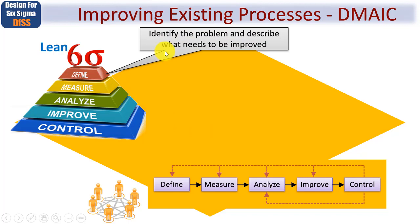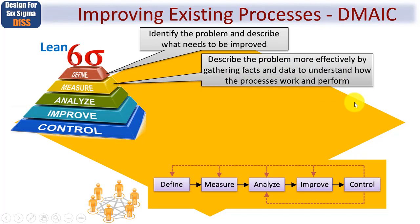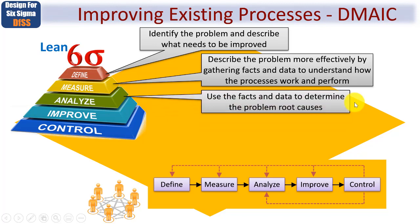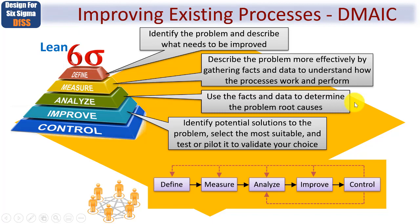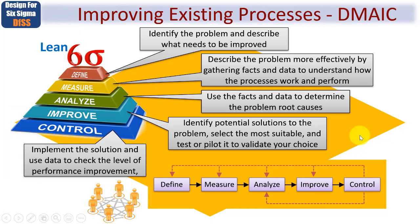The Define phase identifies what the problem is and describes what needs to be improved. Because DMAIC is used for existing processes, products or services, the Measure phase then describes the problem more effectively by gathering facts and data in order to understand how such processes, products or services work and perform. The Analyse step uses those facts and data to determine the root causes of the problem. The Improve phase identifies potential solutions, selects the most suitable option, and tests or pilots it to validate that your choice was indeed the best. Finally, Control implements the solution and continues to use data to check the level of performance improvement.